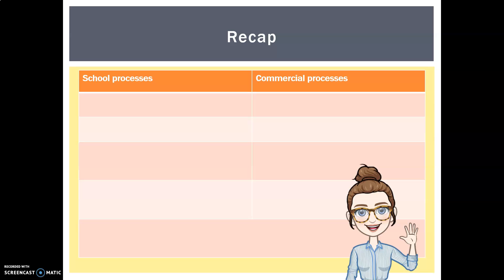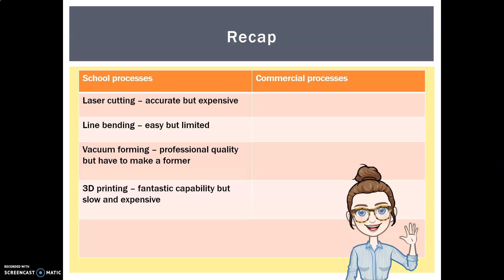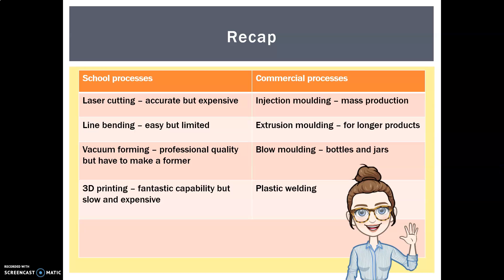In summary, we learned some of the main school plastic processes — laser cutting, line bending, vacuum forming, and 3D printing — as well as commercial processes including injection moulding, extrusion moulding, blow moulding, and plastic welding. In both school and commercial contexts, there are also ways to join and finish plastics. Well done everyone, and I'll catch you in the next one!